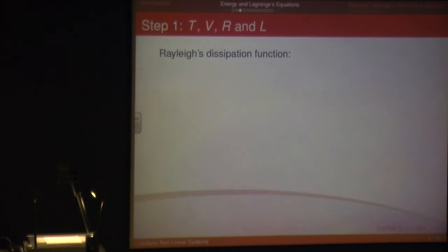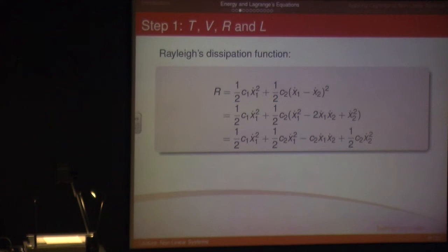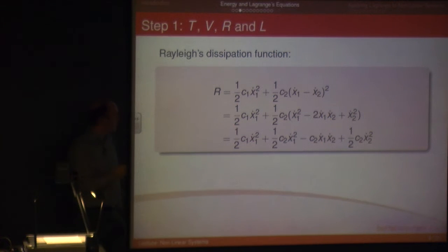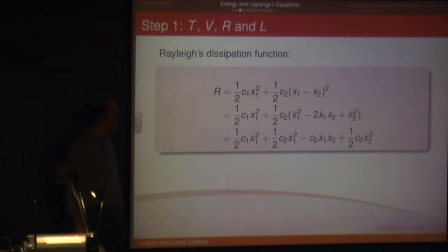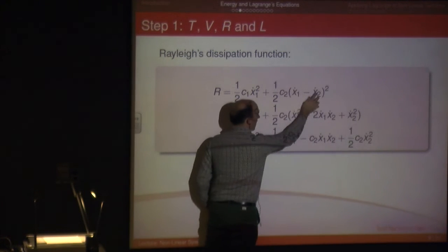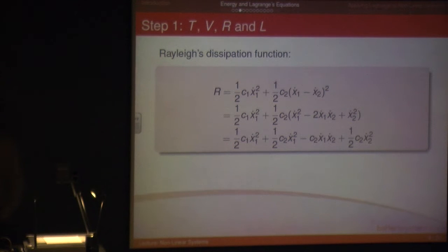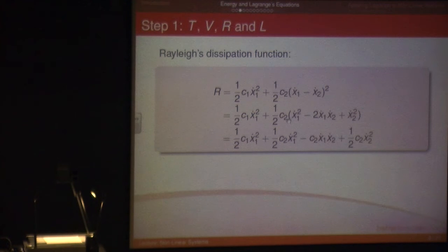Now I can work out what R is — I've got my two dampers. Damper 1 is related just to the motion of X1, so I've got one-half C1 X1-dot squared. The second damper is between the two masses, so I've got the relative velocity of the two masses multiplied by one-half C2. Again, I multiply this out — it doesn't matter the order because you get the same result. Then I've just written it out in long form.